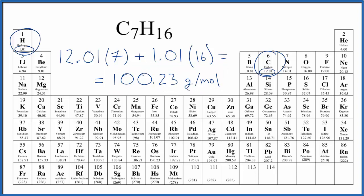What this means is if we have 100.23 grams of C7H16, we'll have one mole of C7H16. Or if we're given one mole, we know that it has a mass of 100.23 grams.